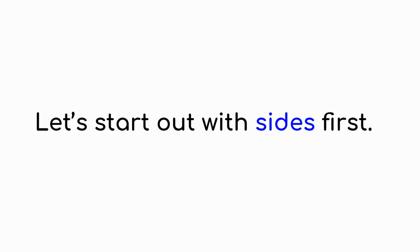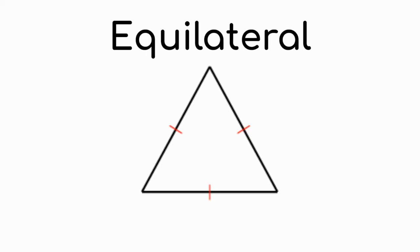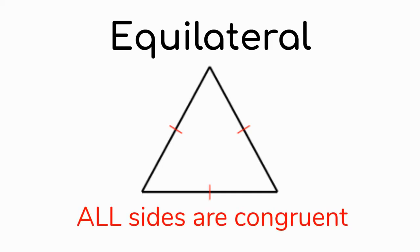Let's start out with sides first, so get ready for some new words. Take a look at this triangle — it is called an equilateral triangle. Equilateral means that all sides are congruent. Congruent means equal or the same. As you can see by the three red dashes on each side, each side is equal — they're all the same size and same length. So this is an equilateral triangle.